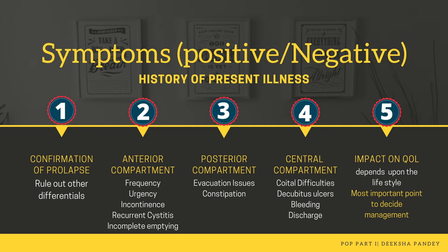To confirm that the vaginal mass is a case of prolapse, prolapse would be suspected when the patient gives a history of gradual increase in the size of the mass over years, when it reduces with rest and increases with exertion, is minimal in the morning and increases as the day passes, and when it becomes prominent while coughing or during other activities that increase abdominal pressure.